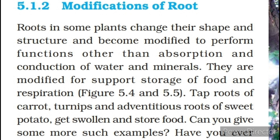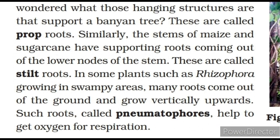Modifications of root. Roots in some plants change their shape and structure and become modified to perform functions other than absorption and conduction of water and minerals. They are modified for support, storage of food and respiration. Have you ever wondered what those hanging structures are that support a banyan tree? These are called prop roots. Similarly, the stems of maize and sugarcane have supporting roots coming out of the lower nodes — these are called stilt roots. In some plants such as Rhizophora growing in swampy areas, many roots come out of the ground and grow vertically upwards. Such roots, called pneumatophores, help to get oxygen for respiration.